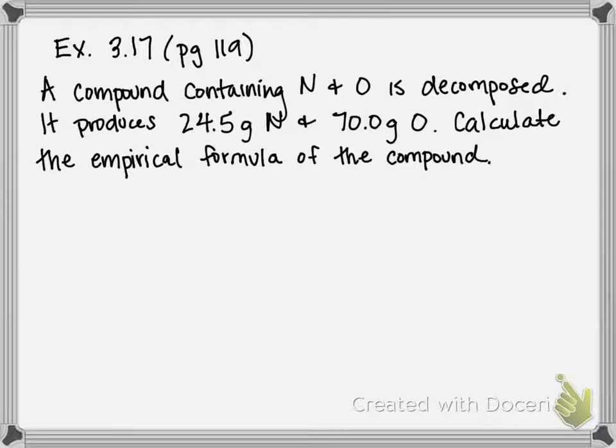So the first step in this example is to convert both nitrogen amounts and oxygen amounts to moles. Remember, an empirical formula is basically the simplest whole number ratio of elements within a compound, and we've looked at some previous examples of this.